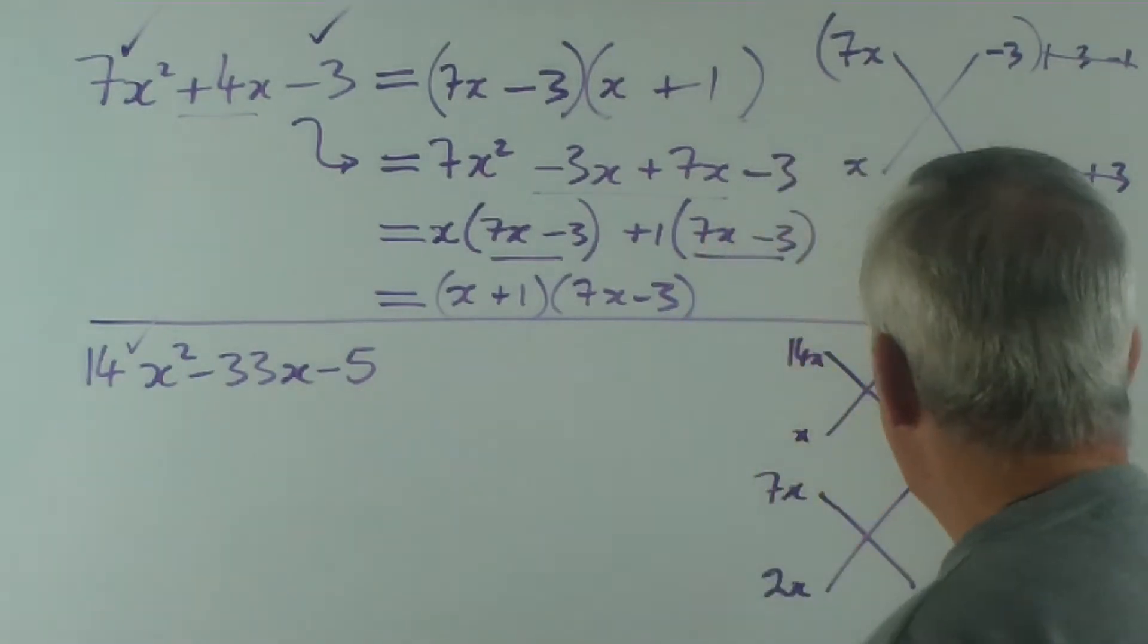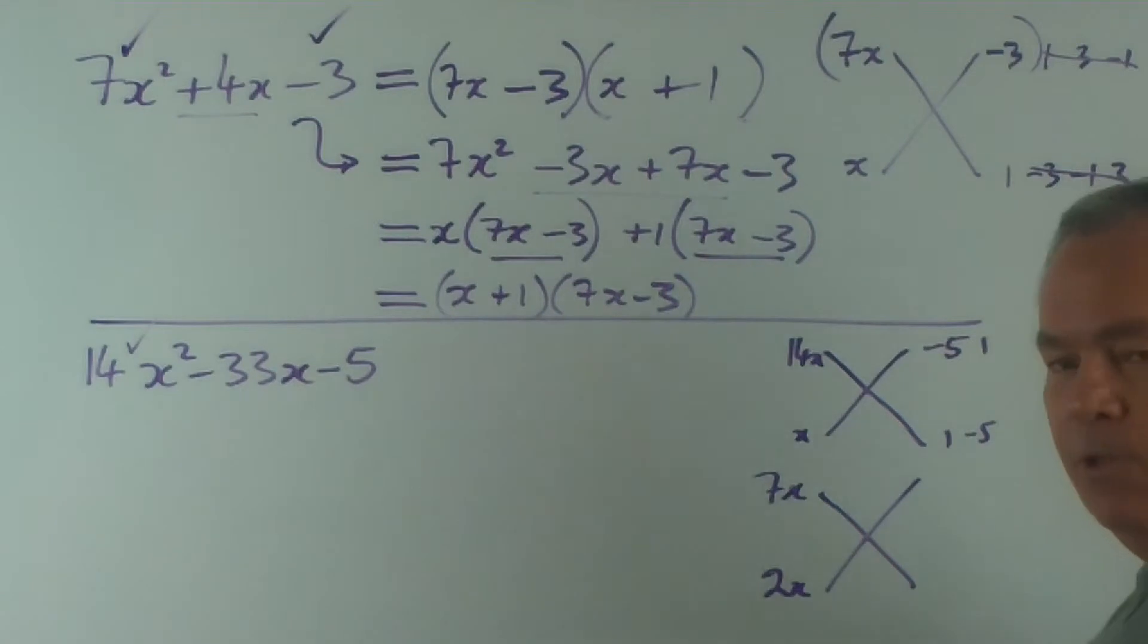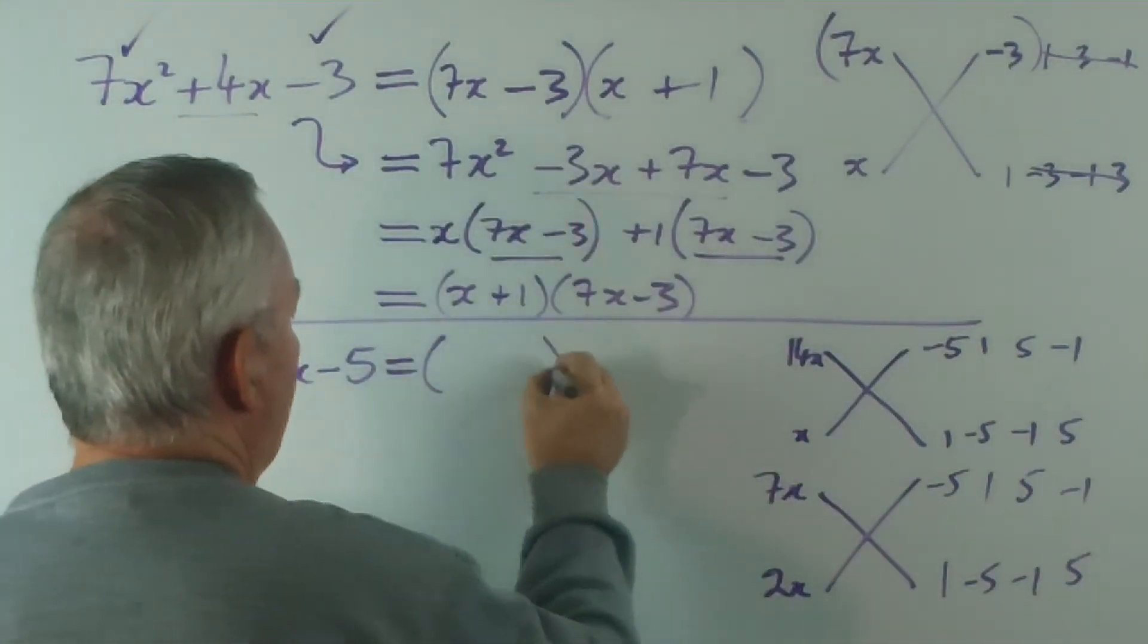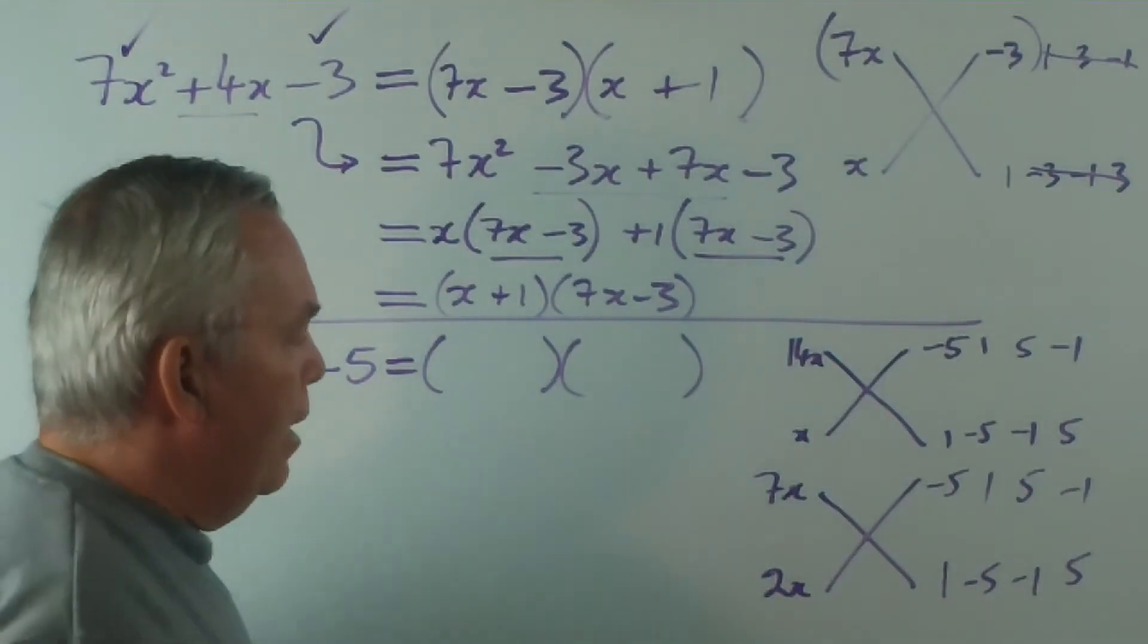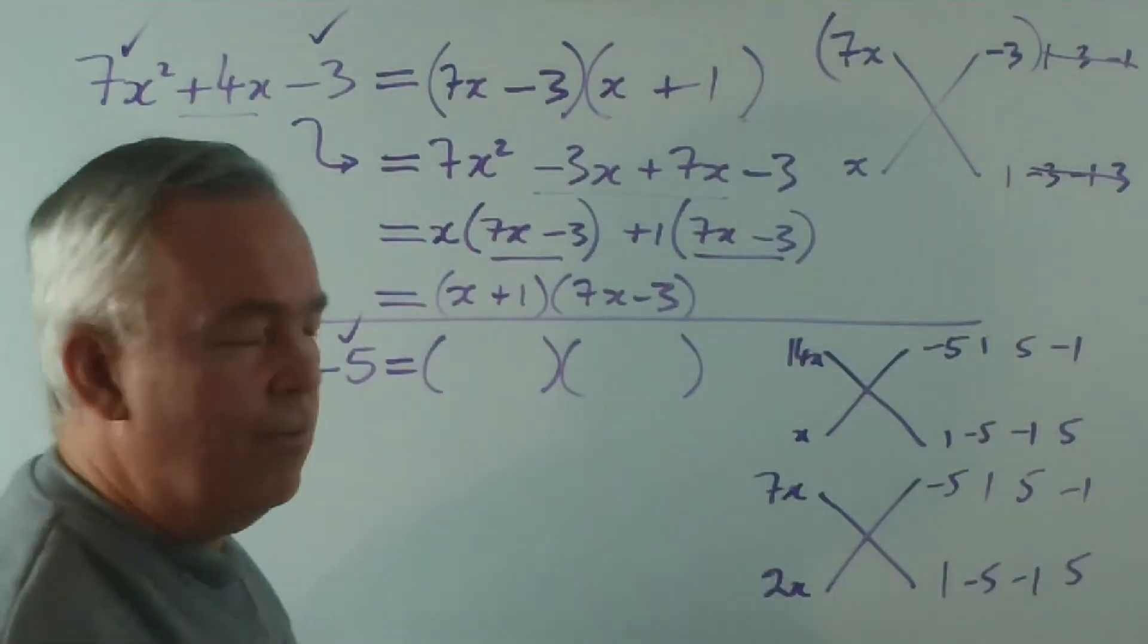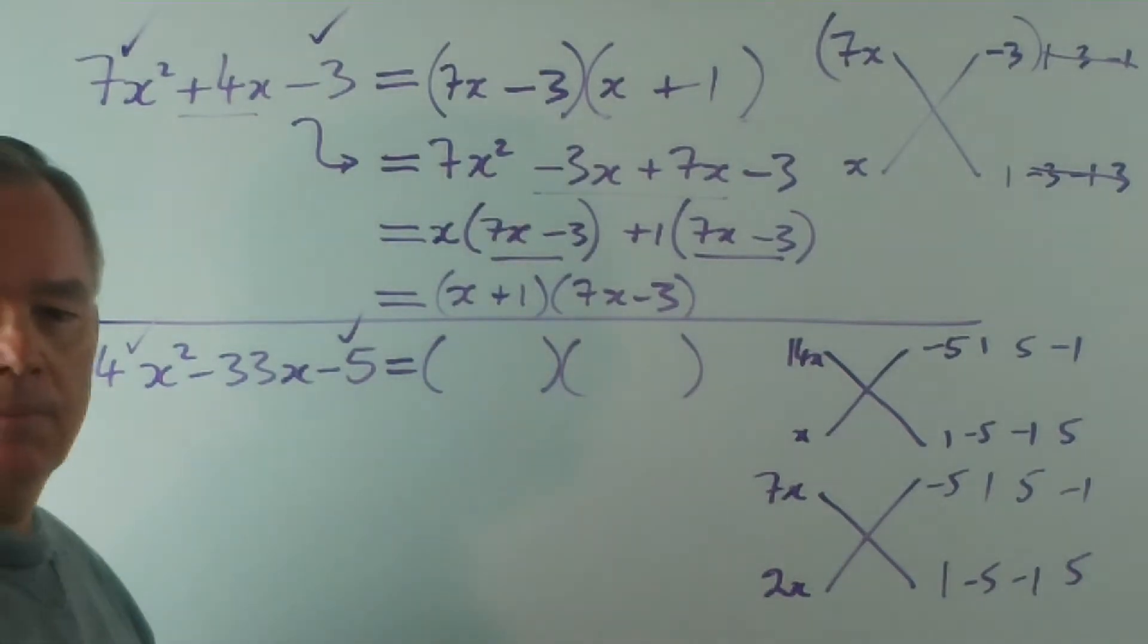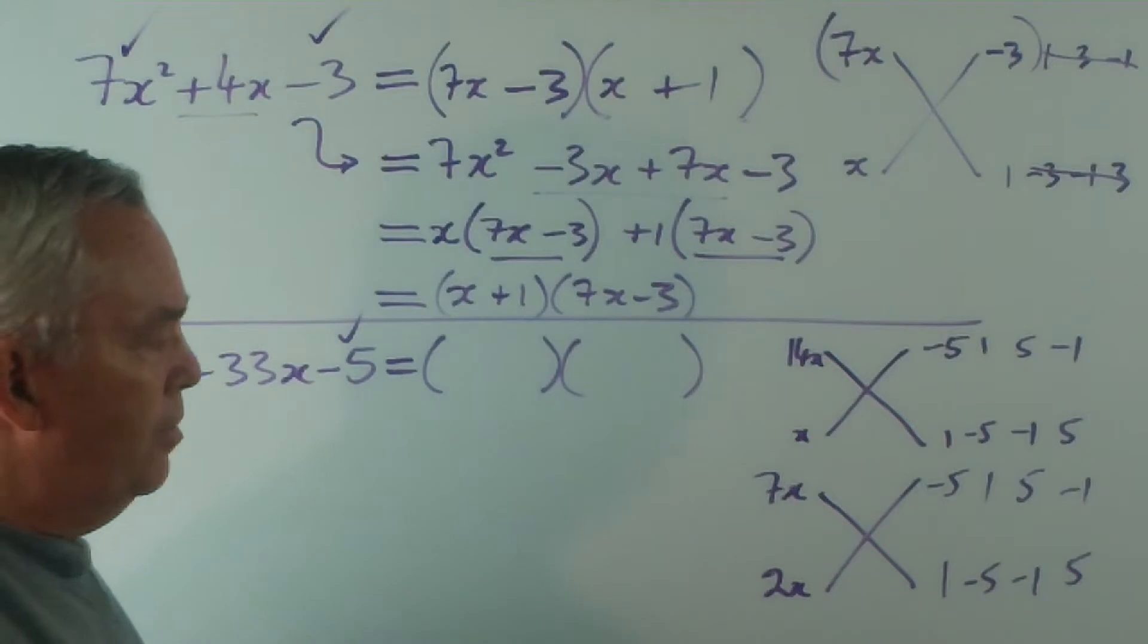Now, both these combinations will give us the 14x squared. To get the minus 5, fortunately, 5 is prime. We can multiply minus 5 times 1. And we've got to try it in reverse combination as well. And plus 5 times minus 1. And do that in reverse. And fortunately, that's all we need to do. But we've got to try the same combination down here. Minus 5 times 1. And 5 times minus 1. I'm just getting ready for the answer now. Now, the minus 5 is taken care of. We know that all these combinations will multiply to give minus 5. Only one of these combinations might be here, it might be here. Only one of them will give minus 33.